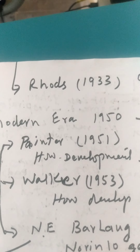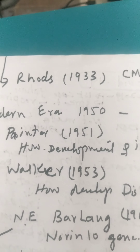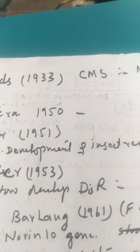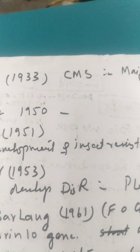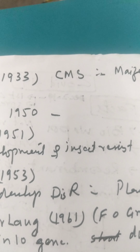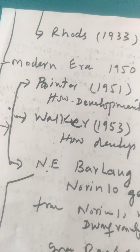Next is R. H. Rhoades. In 1933, he worked on cytoplasmic male sterility, known as CMS, in maize. The next era is the Modern Era, which starts from 1950 to the present.